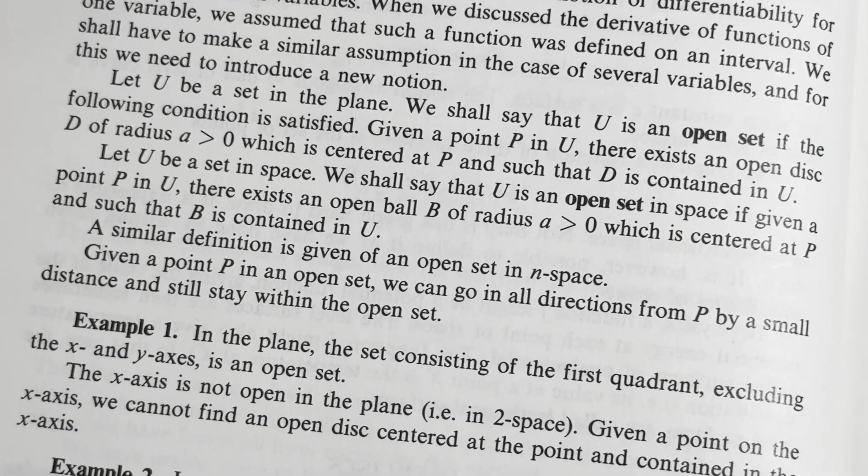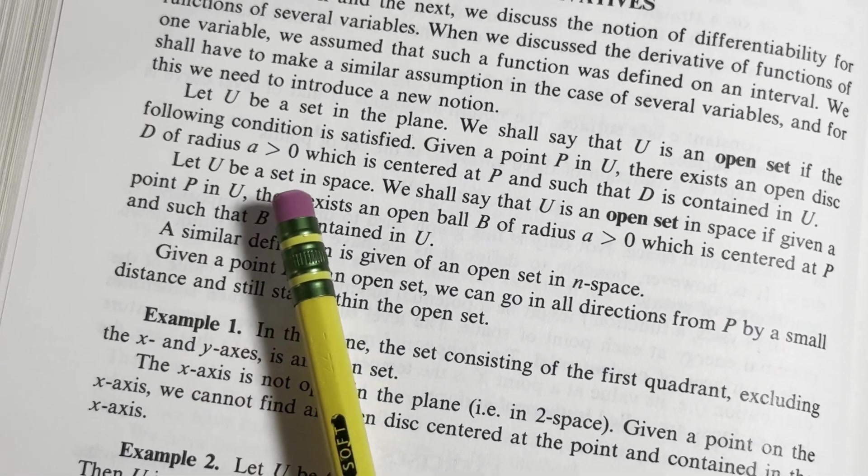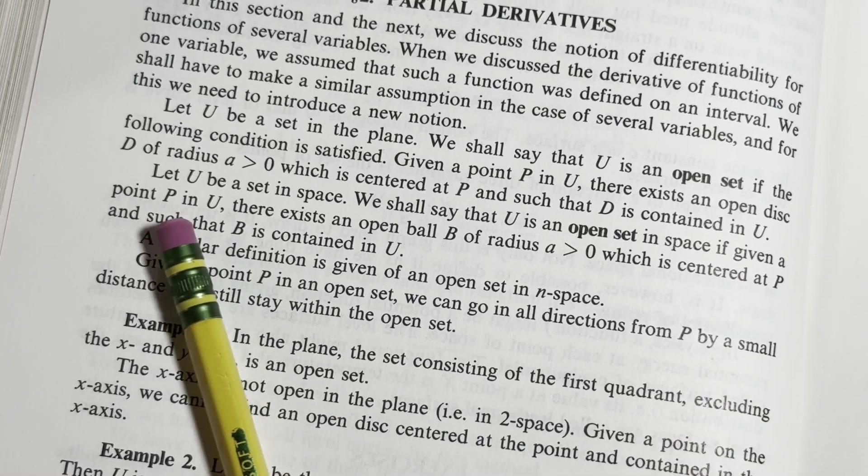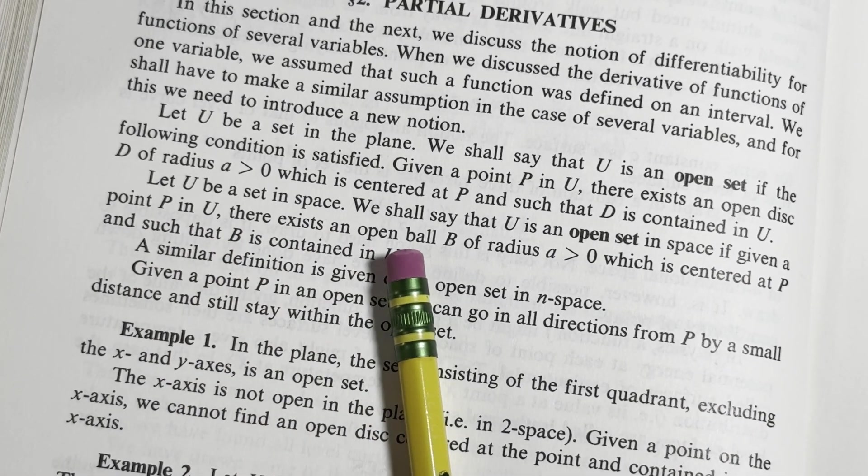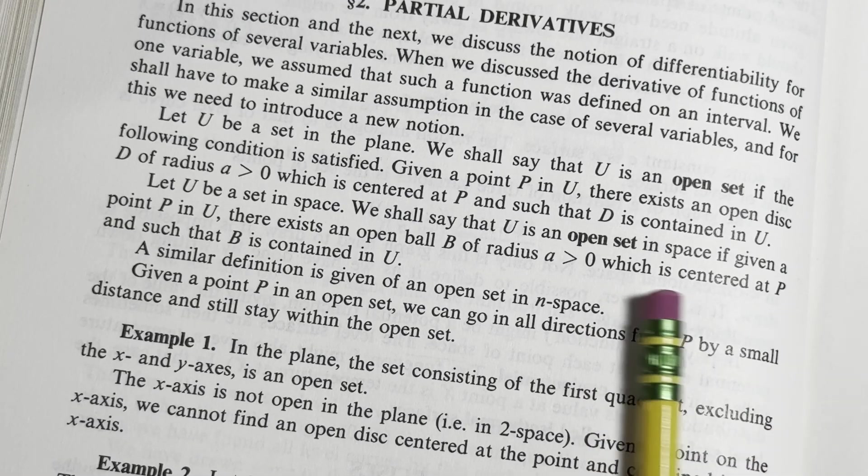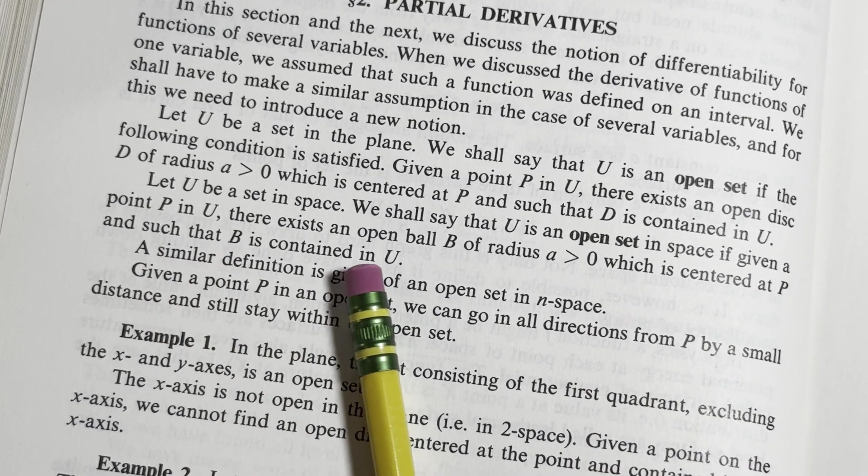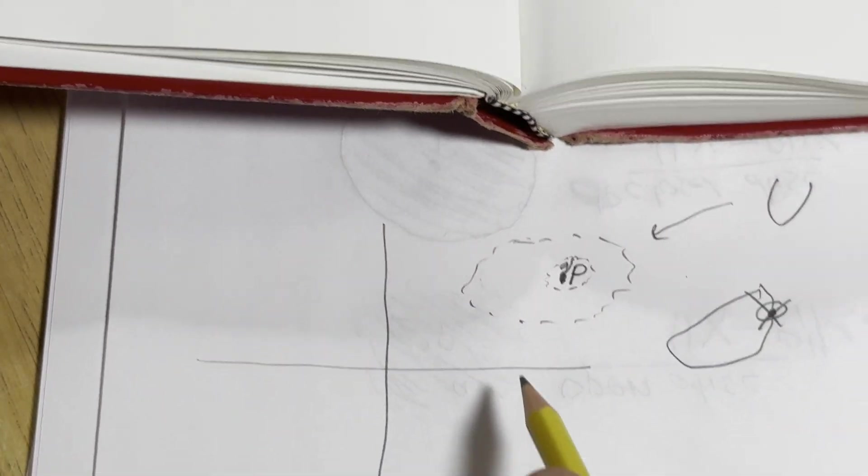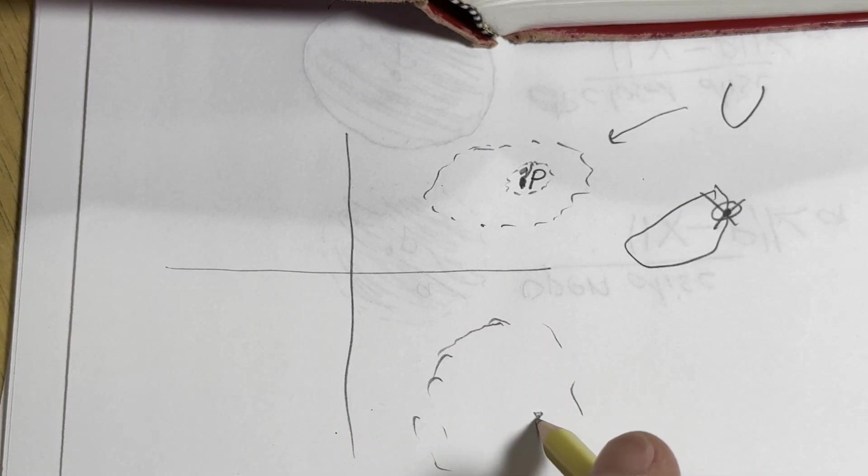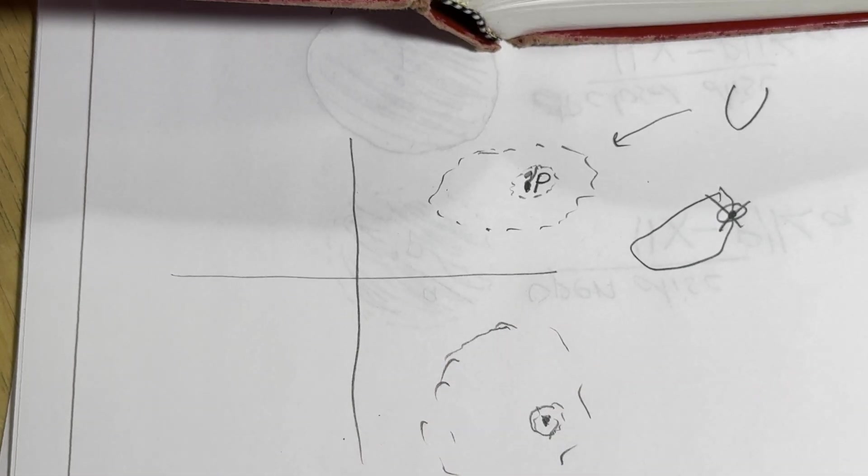Let U be a set in space. We shall say that U is an open set in space if given a point P in U, there exists an open ball B of radius A greater than zero which is centered at P, such that B is contained in U. Basically, for it to be open, given any point in the set, you have to find a ball, an open ball that's contained in that set. That's the idea.